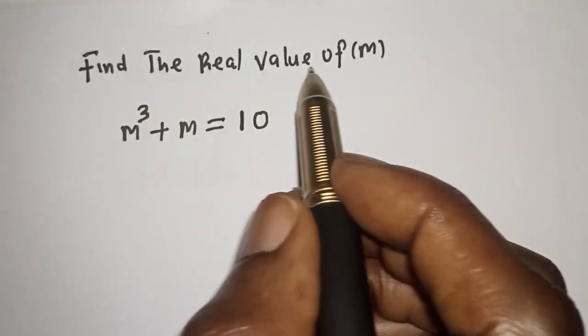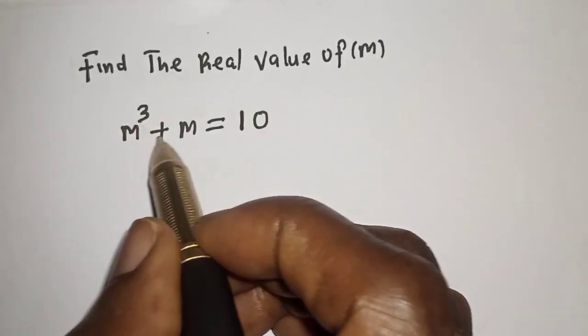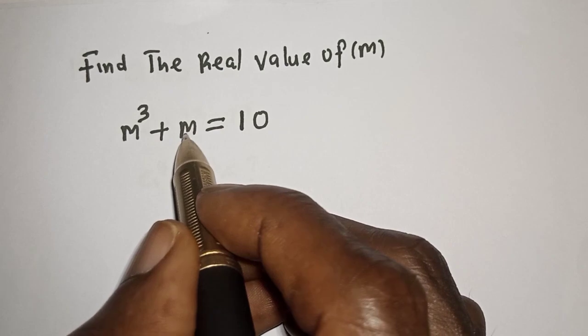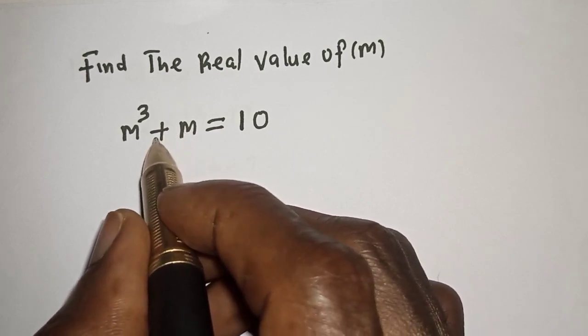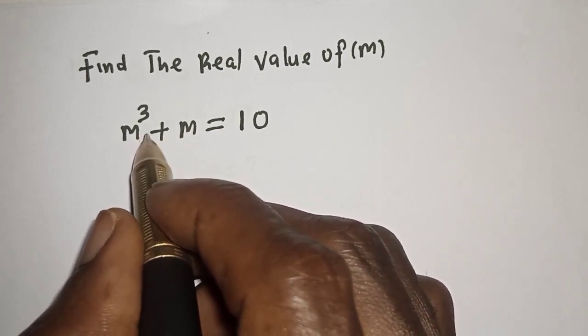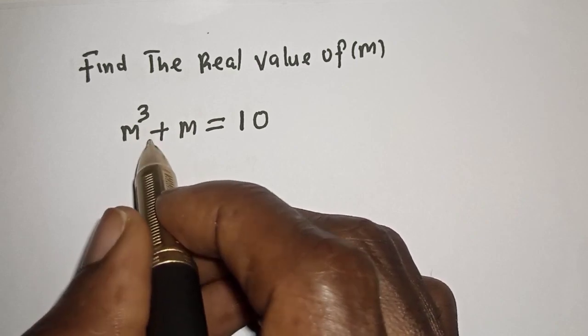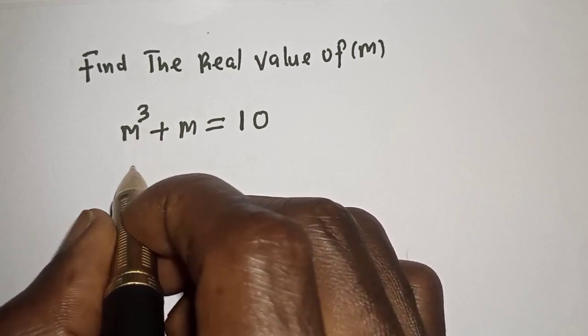Find the real value of m, where m raised to the power 3 plus m is equal to 10. Hello, welcome to Mathfocus. How to solve for m from this given equation?